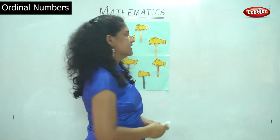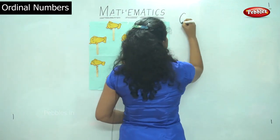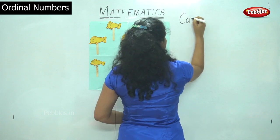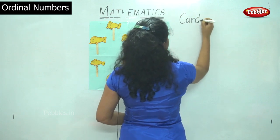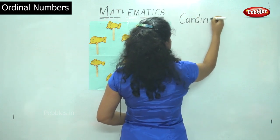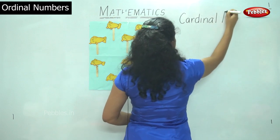We have already learnt cardinal numbers. So cardinal numbers are nothing but numbers 1, 2 and so on. So these are the cardinal numbers.